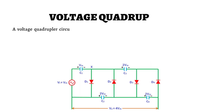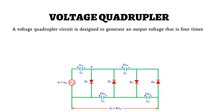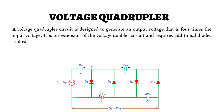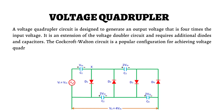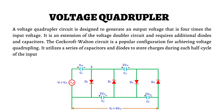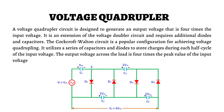A voltage quadrupler circuit is designed to generate an output voltage that is four times the input voltage. It is an extension of the voltage doubler circuit and requires additional diodes and capacitors. The Cockcroft-Walton circuit is a popular configuration for achieving voltage quadrupling. It utilizes a series of capacitors and diodes to store charges during each half-cycle of the input voltage, producing an output voltage four times the peak value of the input voltage.